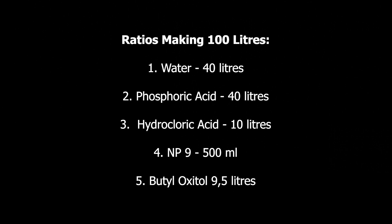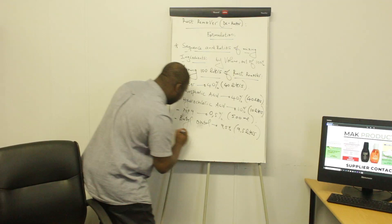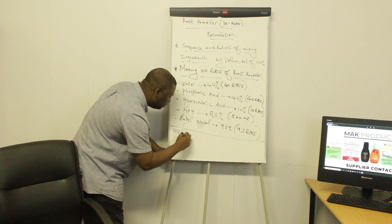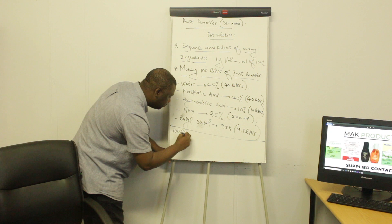Out of the 100 liters of rust remover that we are manufacturing, we need to consider 9.5 liters of butyl oxytone. By doing this, you actually obtain 100 liters of rust remover.